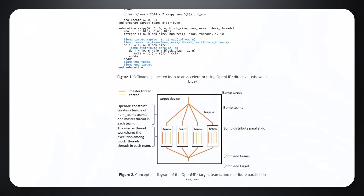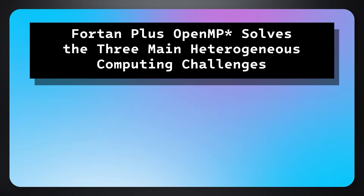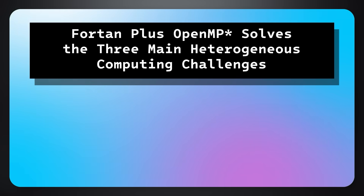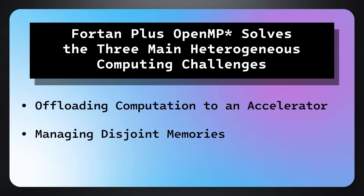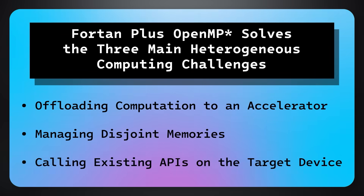Continuing through the article, you'll learn how Fortran plus OpenMP solves the three main heterogeneous computing challenges: offloading computation to an accelerator, managing disjoint memories, and calling existing APIs on the target device.